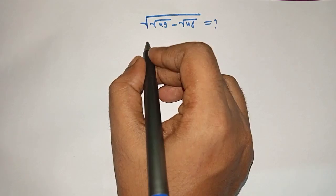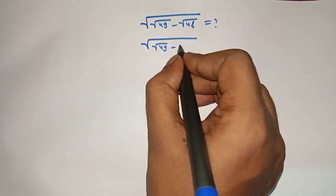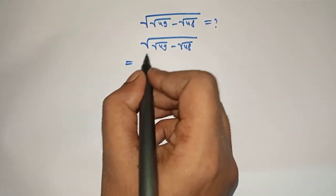So let's solve. Square root of square root of 49 minus square root of 48 is equal to...